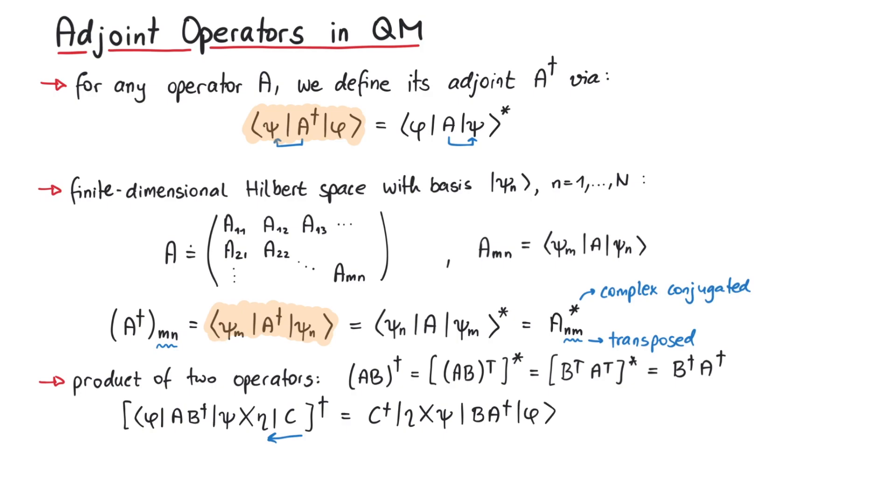As a final remark, taking the adjoint is an anti-linear operation. For some linear combination of operators, we can separate the adjoint of the sum into the sum of the adjoints, which makes this linear. However, the constants get complex conjugated. Therefore, this is called an anti-linear operation.